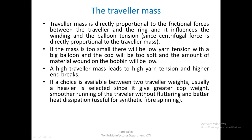If a choice is available between two traveler weights, a heavier one is usually selected since it gives a better cop — it increases the amount of yarn that can be wound, helps in smoother running of the traveler without fluttering, and gives better contact with the ring for better heat dissipation. This heat dissipation benefit of a heavier traveler is especially useful for synthetic fiber spinning.